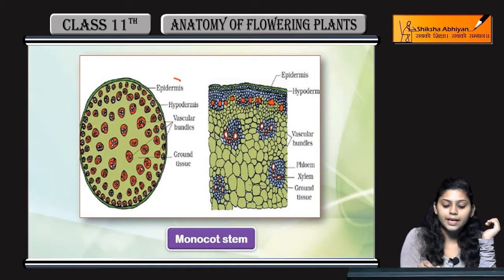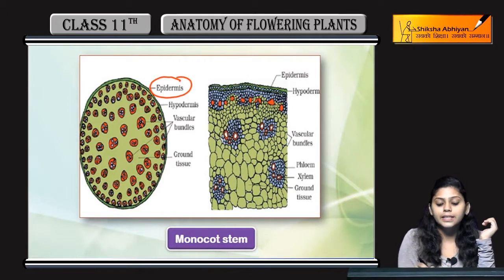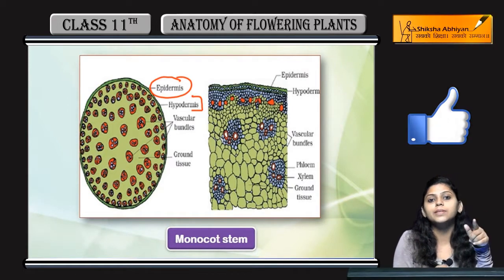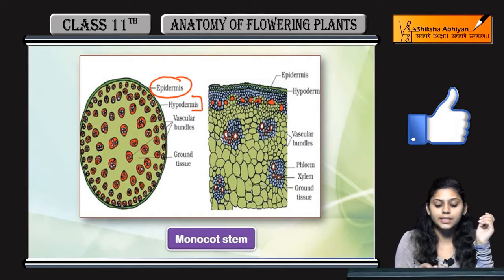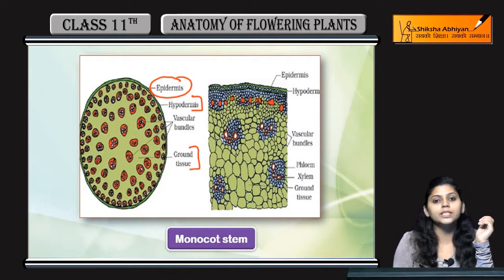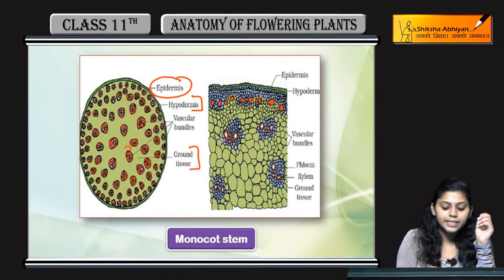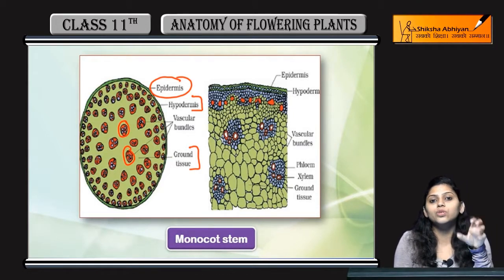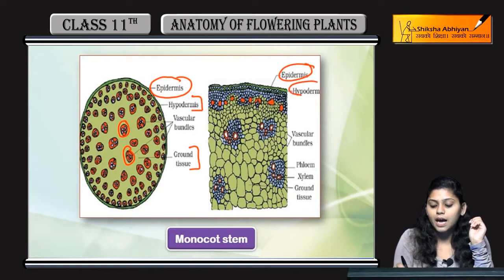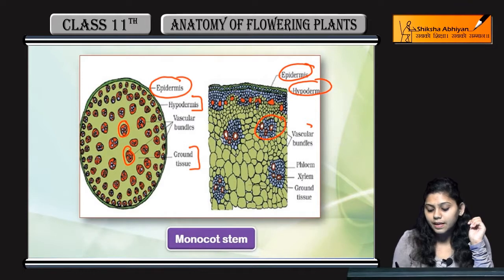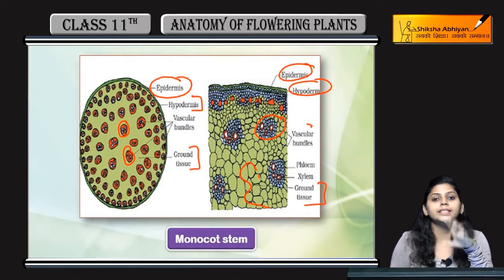Let's see what we have: the outer layer is epidermis, then is hypodermis, which is made of sclerenchymatic cells. Ground tissue is present, and within the ground tissues you will find scattered xylem and phloem, which are conjoint and closed. So the layers are: epidermis, hypodermal layer, vascular bundles, and ground tissue. This is about the monocot stem.